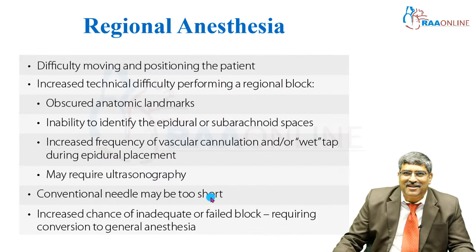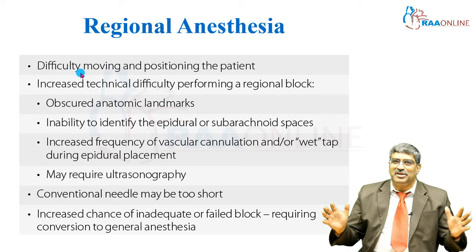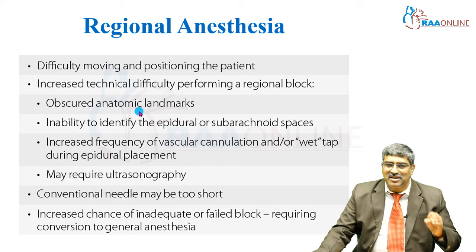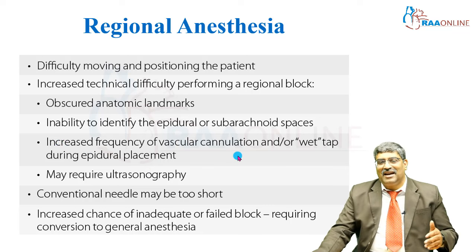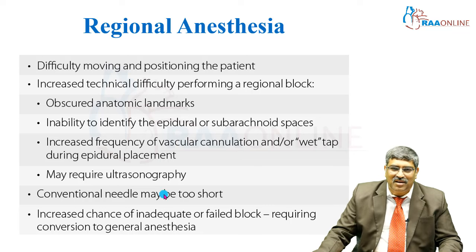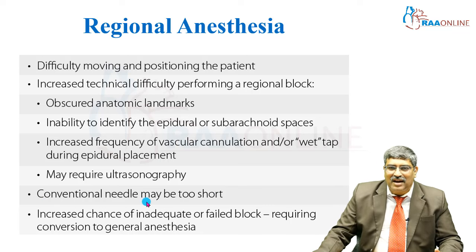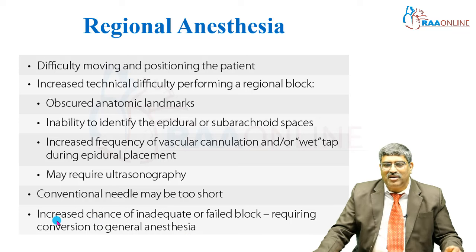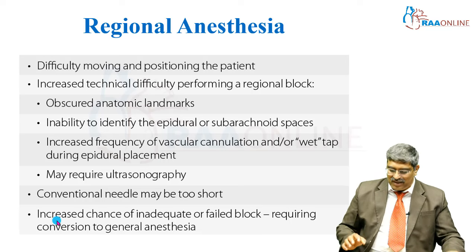Regional anesthesia is not easy in obese patients. There is difficulty in moving and positioning due to large size, obscured anatomic landmarks making localization very difficult, inability to identify the epidural or subarachnoid space, increased frequency of vascular cannulation during epidural placement, the need for ultrasound guidance, and the conventional needle may be too short requiring a larger needle. There is also increased chance of inadequate or failed block requiring conversion to general anesthesia.